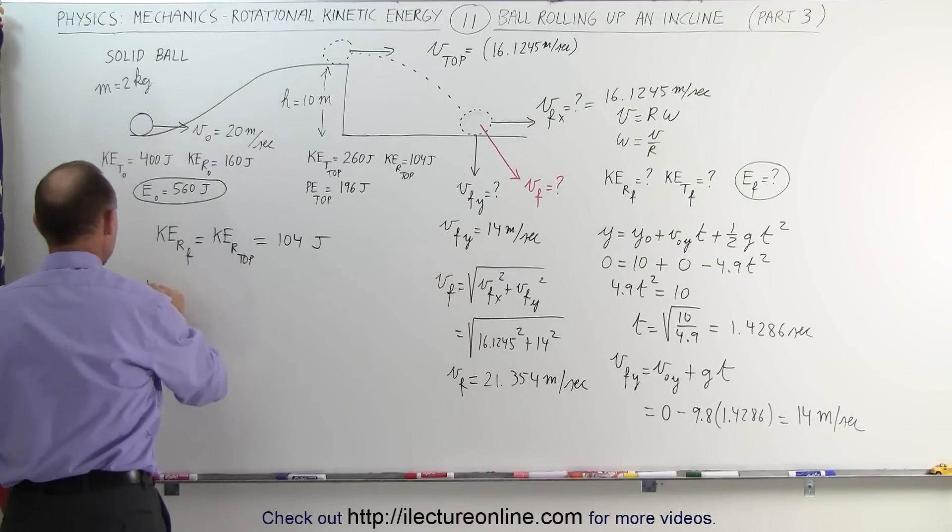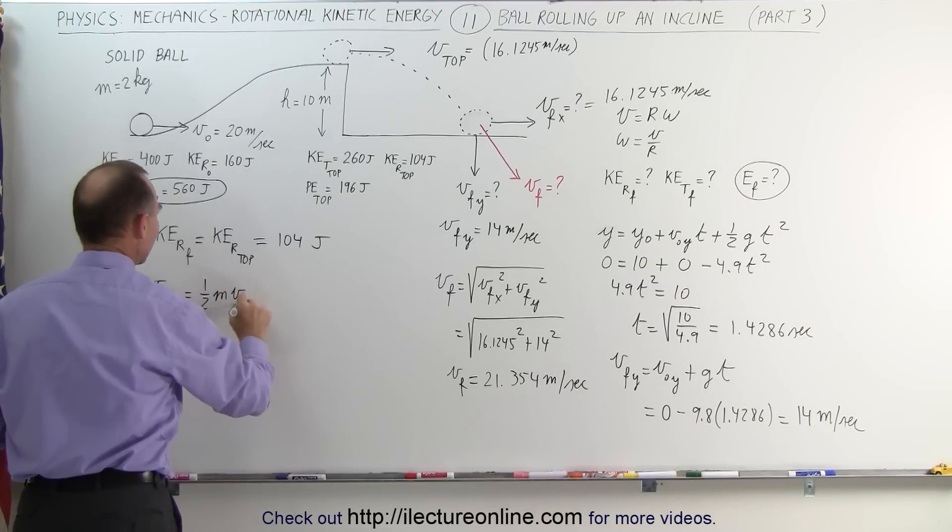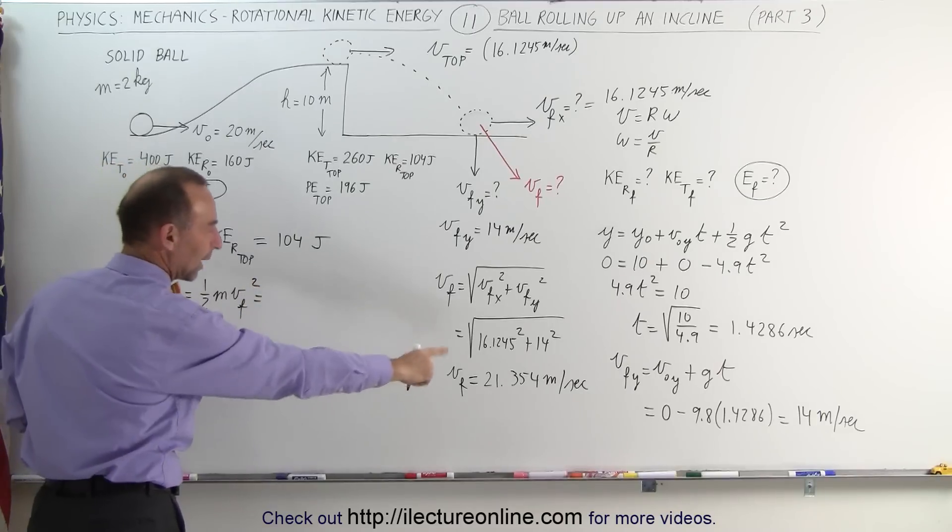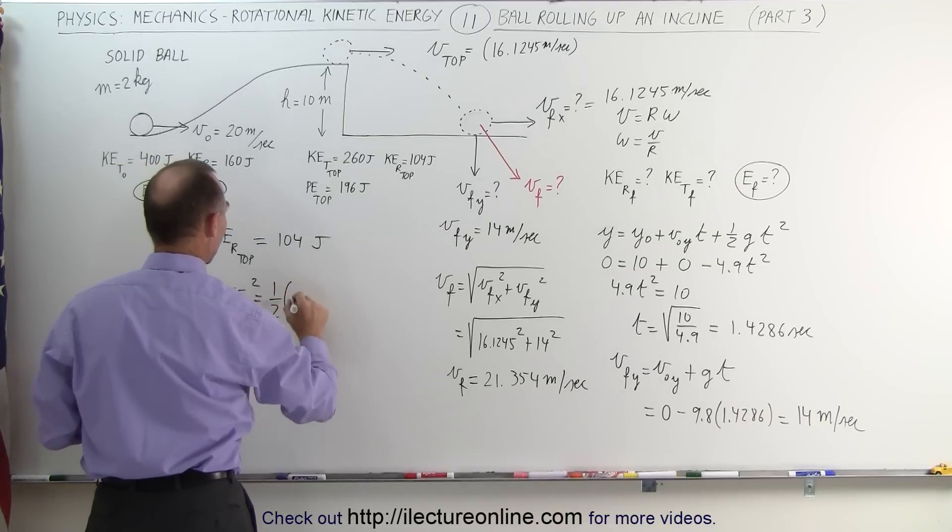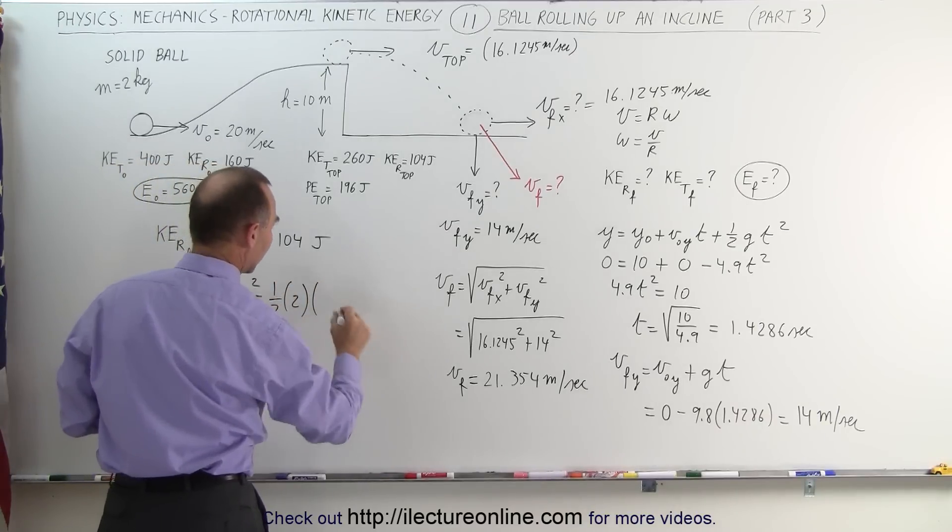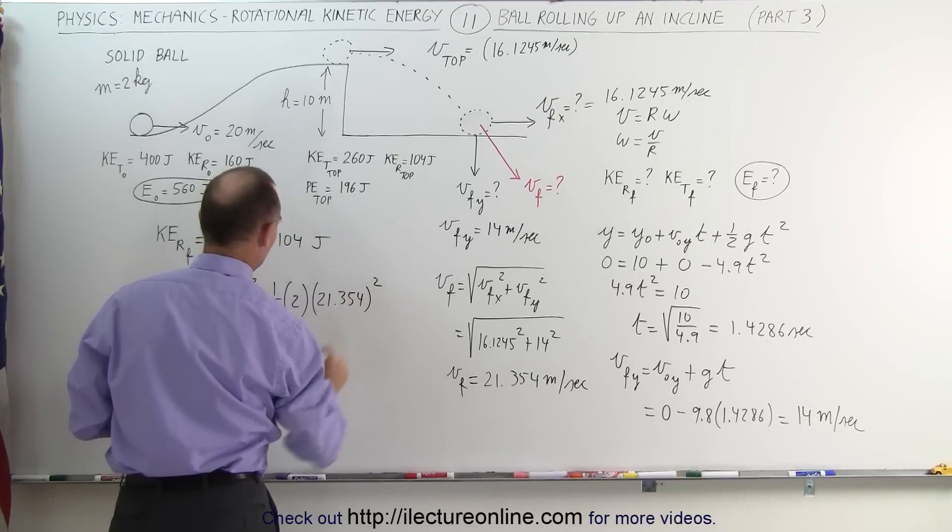Now to calculate the translational final kinetic energy, that would be one-half m v final squared, and of course we have the final velocity squared here. That would be equal to one-half times the mass, 2, times 21.354 squared.